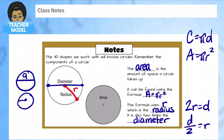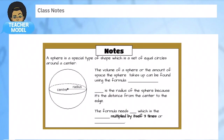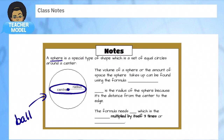In your checkpoint today, you'll have a notes section where you fill in the blanks. Let's think about the sphere — it's a special type of shape that looks like a ball, like a basketball, which is a set of equal circles around the center. The volume of a sphere — the amount of space it takes up — can be found using the formula: four-thirds times pi times radius cubed.